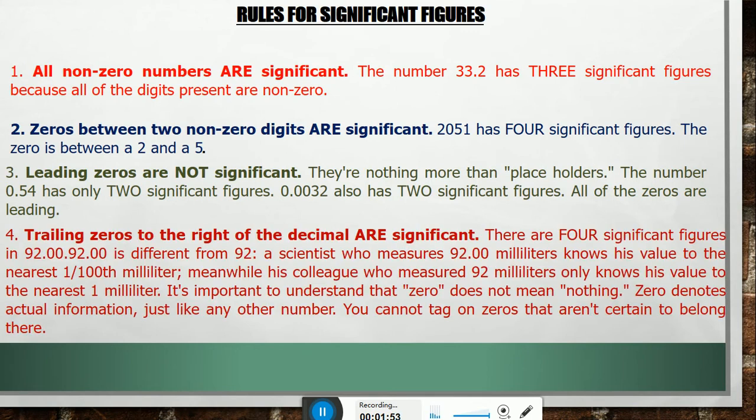Rule 4: Trailing zeros to the right of the decimal are significant. There are four significant figures in 92.00. 92.00 is different from 92. A scientist who measures 92.00 milliliters knows his value to the nearest 1/100th milliliter.